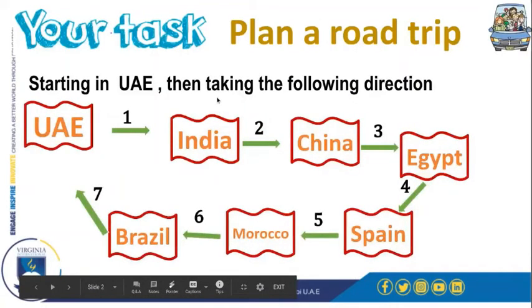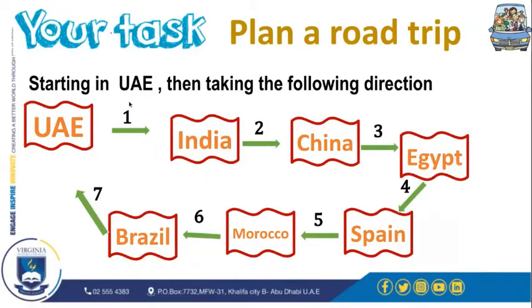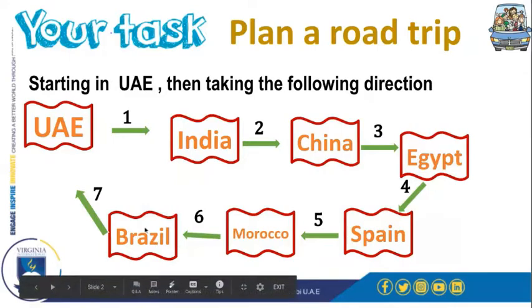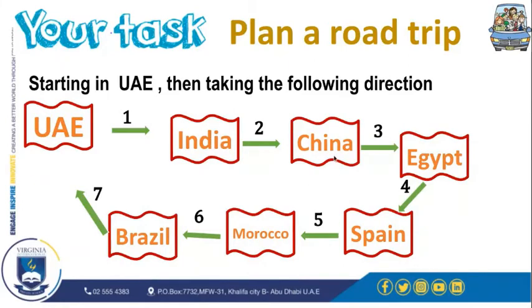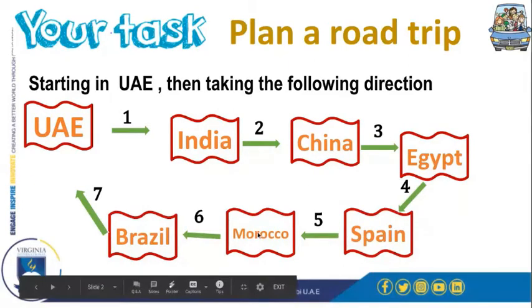Road trip project: your task is to plan a road trip starting in UAE, then taking the following directions. We have seven countries and we're going to make seven stops. From the UAE we're going to go to India, then from India to China, China to Egypt, Egypt to Spain, Spain to Morocco, Morocco to Brazil, and then Brazil back to the UAE. We have a coordinate plane with the point of every country on it.